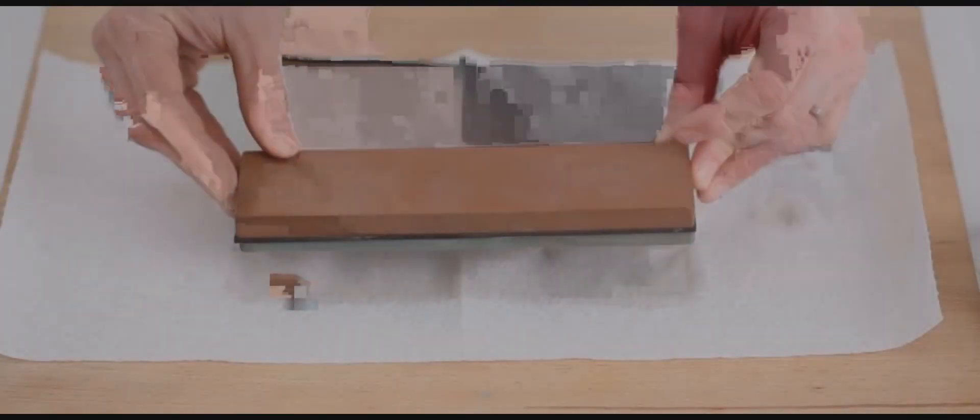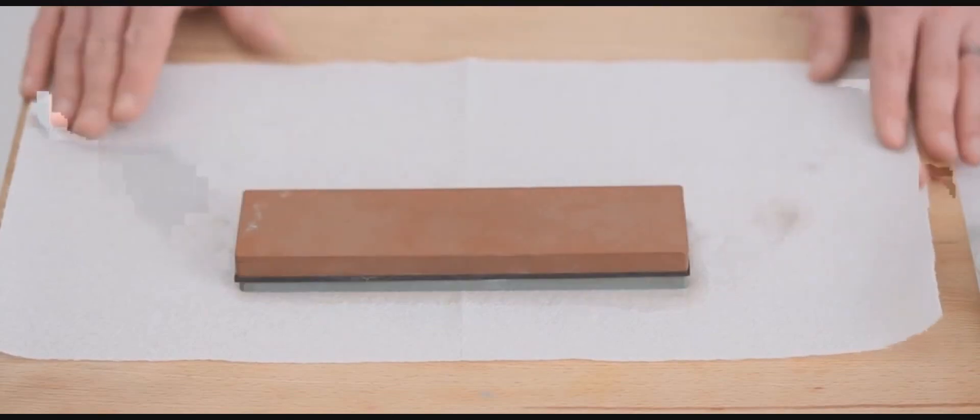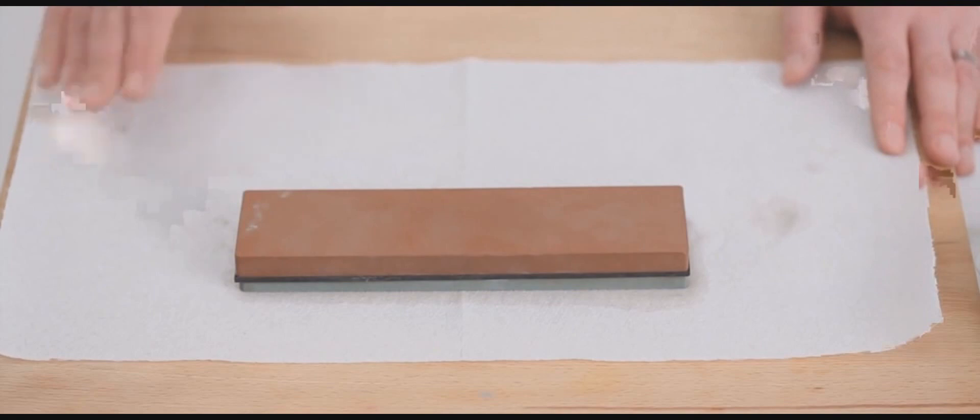And after you've used that, you can move on to something like 1000 grit, and this stone here is 1000 grit. If it's not too badly damaged or not too blunt, you can just use a 1000 grit to sharpen your knife.